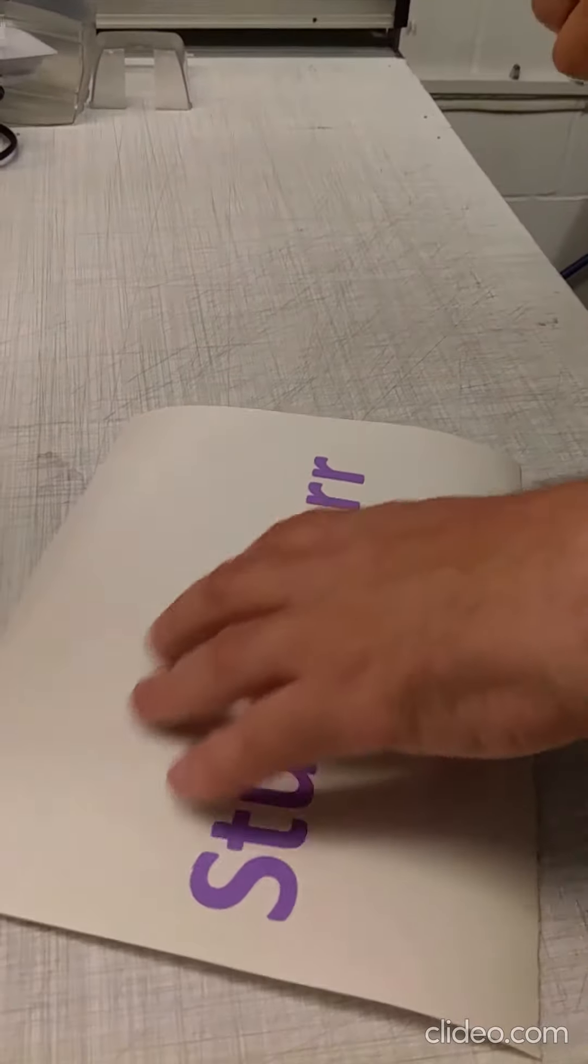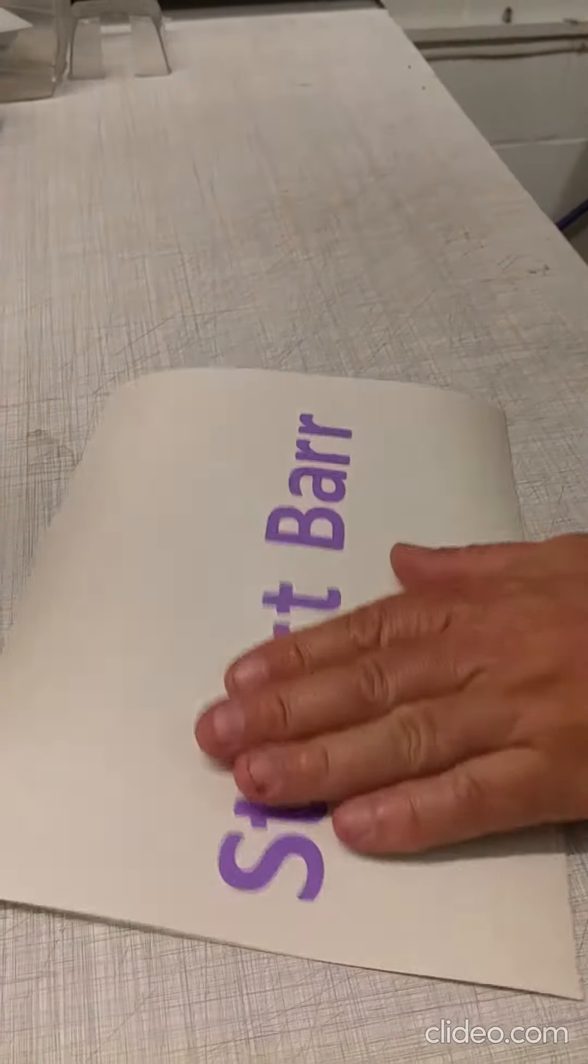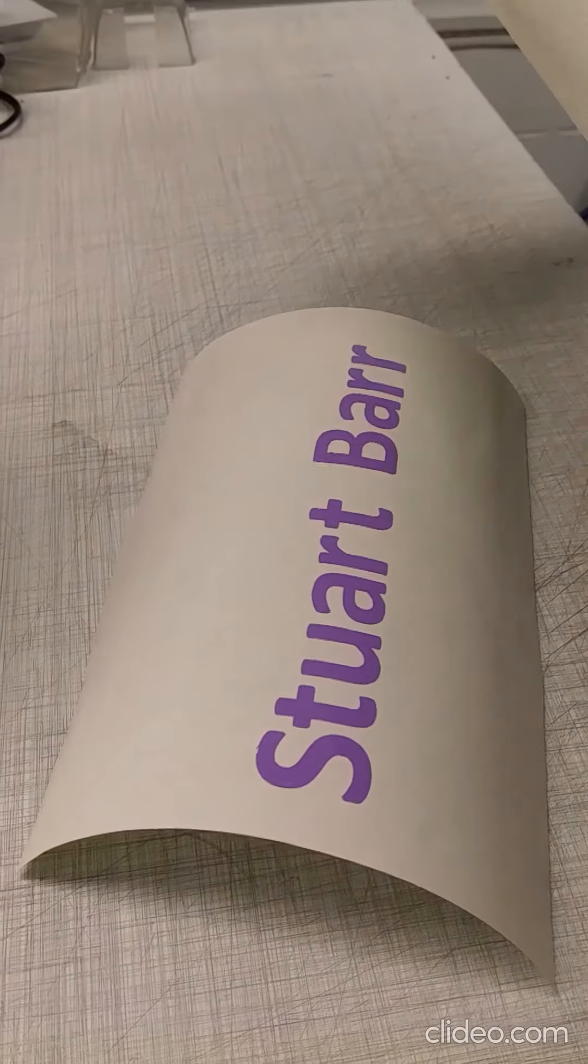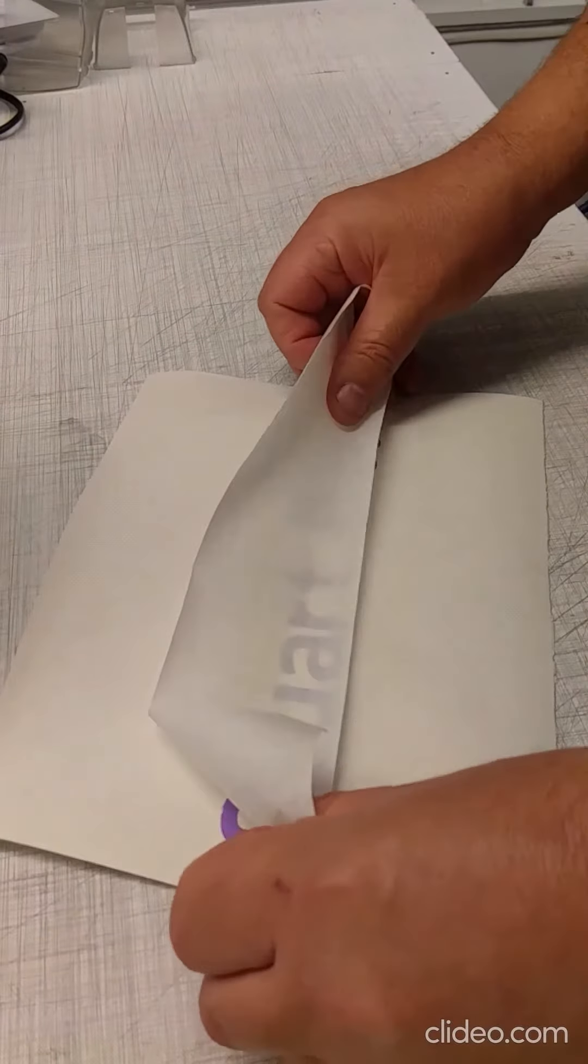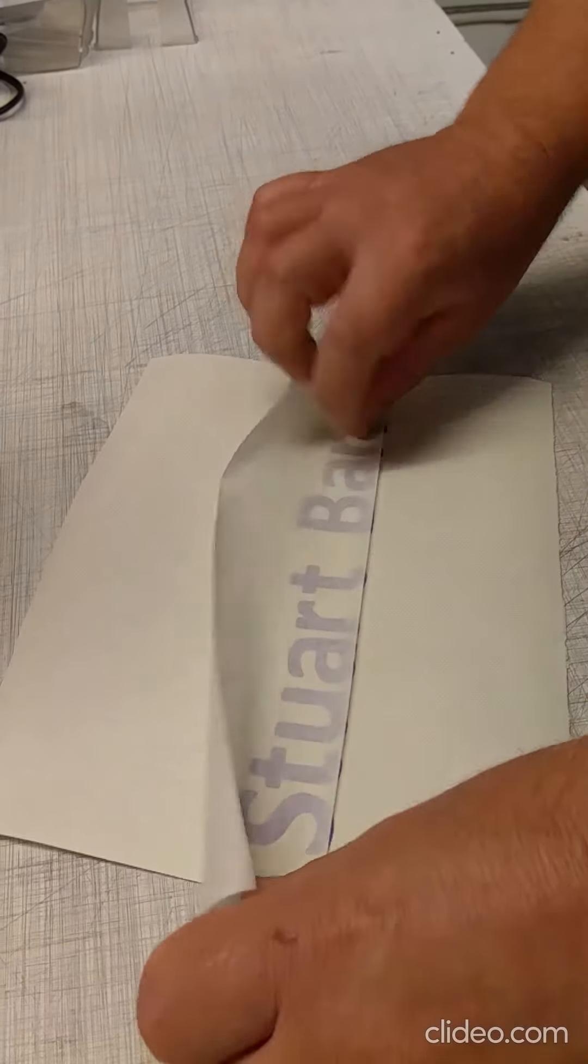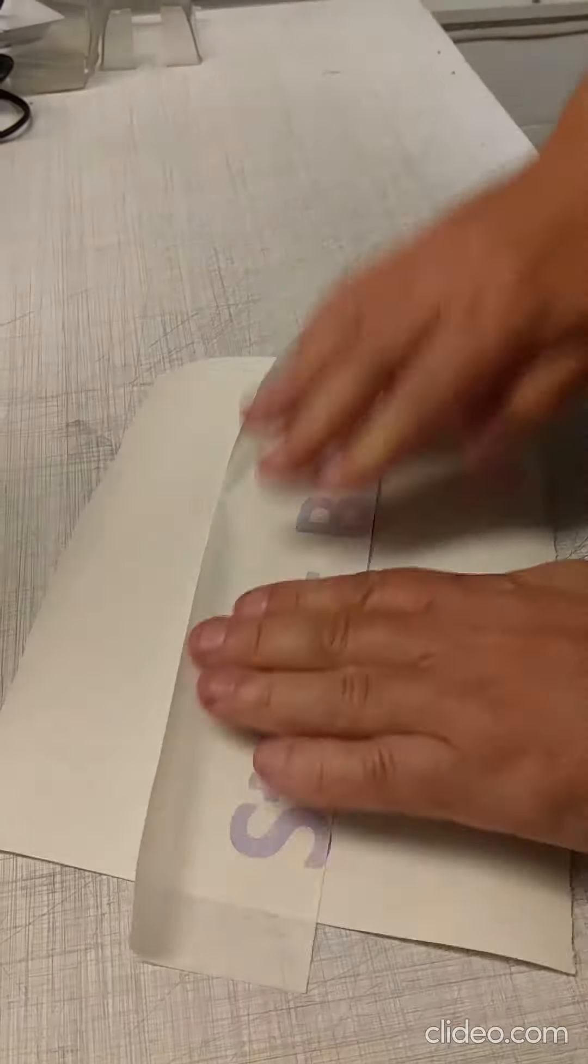I cut vinyl lettering only, no background, but we need to get that onto the board. We use application tape. We stick it on the vinyl and press it down hard with a squeegee.